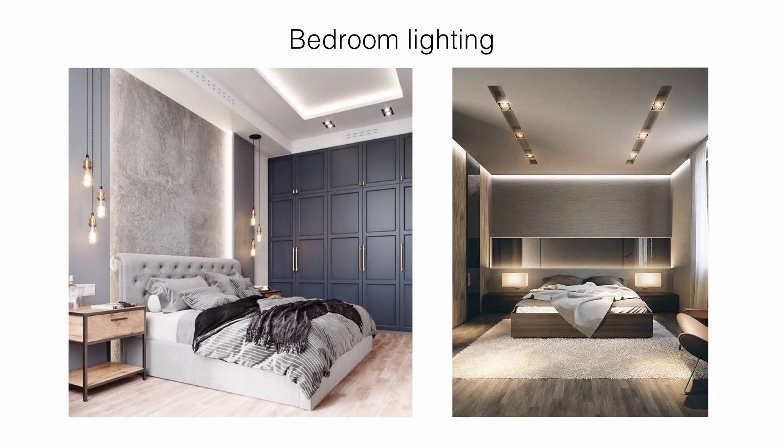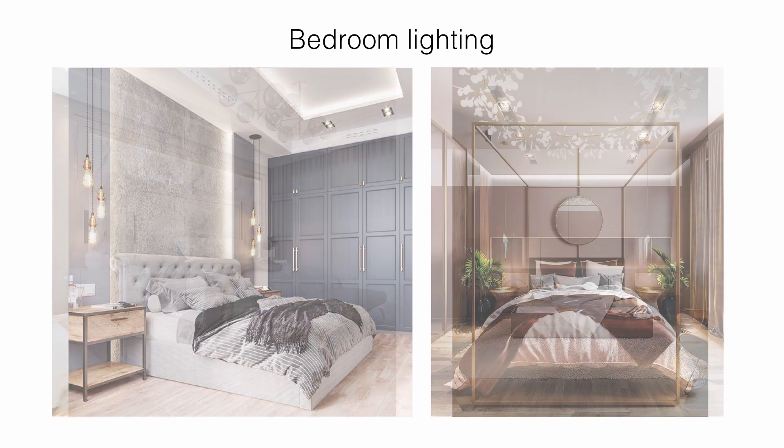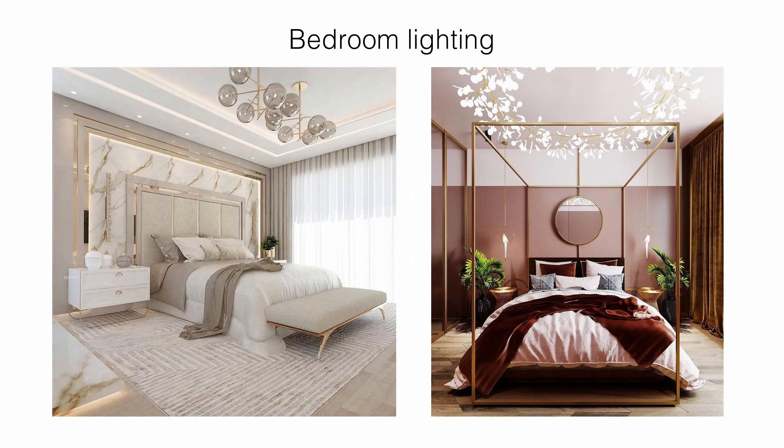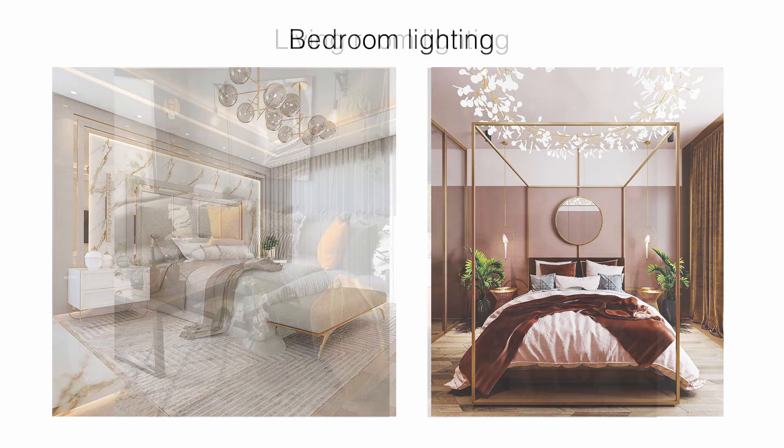Bathroom: the most important thing for installing bathroom lights is to use fixtures rated for damp or wet areas. Recessed lights above showers and bathtubs are common and reliable choices to provide even illumination. To add a stylistic touch, you can play around with some accent lighting.